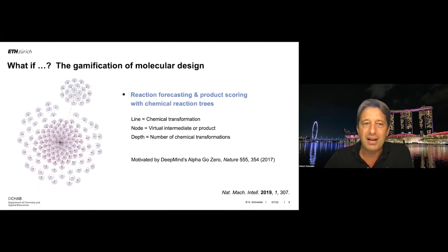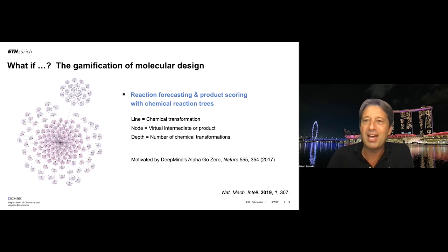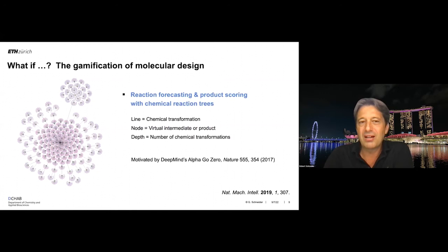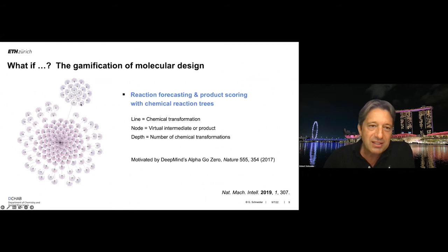Having these and many other examples available, we can now turn to the question: how do we generate new chemical structures with desired predicted activity? Here we borrowed from DeepMind's earlier work on AlphaGo, converting the idea of a game — very gamified chemistry. In this diagram, each dot represents a chemical molecule, a line represents a chemical transformation — a chemical reaction — and the depth of the tree tells us how many consecutive reactions were performed.